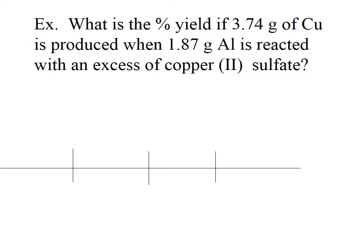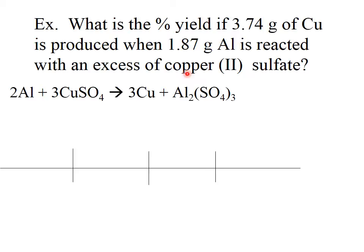Let's look at a couple of examples. We're asked: what is the percent yield if 3.74 grams of copper is produced when 1.87 grams of aluminum reacts with an excess of copper sulfate? So we write our balanced equation. We're already told that copper sulfate is in excess, so we don't have to use it in our calculations, but we need it in our balanced equation. We're given 3.74 grams of copper, and since it is produced, copper is a product — that means it's our actual yield. We start with 1.87 grams of aluminum, and we need to find how many grams of copper are produced from that. So we have to find our theoretical yield; we're already given the actual yield.